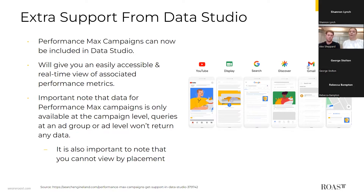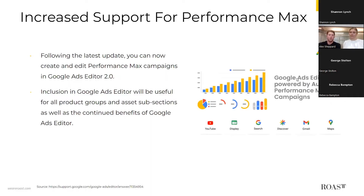Performance Max now has extra support from Data Studio, meaning campaigns can be included in your Data Studio dashboards for an easily accessible, real-time view of performance metrics. However, data for Performance Max campaigns is only available at the campaign level — queries at an ad group or ad level won't return data, and you will not be able to review by placement. Google has also increased support for Performance Max in Google Ads Editor 2.0, which fully supports Performance Max campaigns, asset groups, and product groups, allowing you to create and edit campaigns directly in platform.